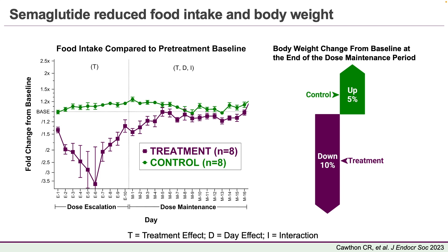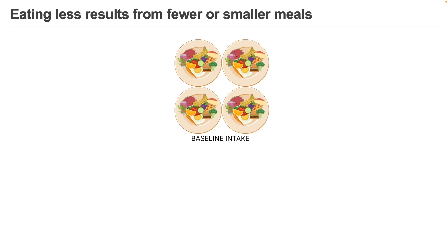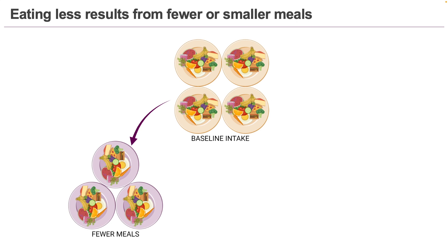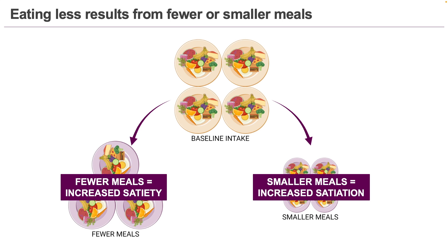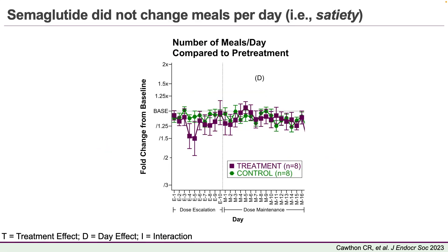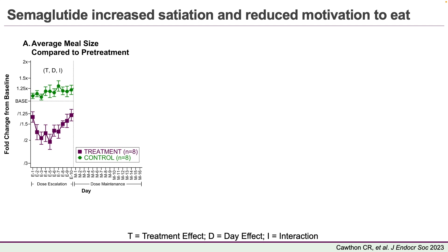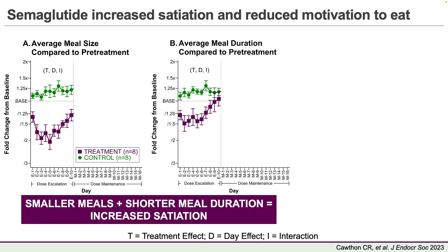But total intake is the result of behavior, and I wanted to know how it happened. So I turned to meal patterns. Like humans, rats eat in discrete bouts that we call meals. For a rat or a human to eat less, they would need to eat either fewer or smaller meals. Since meal frequency and meal size are controlled by different pathways in the brain, accurately studying the eating behavior provides a neuroscience roadmap. When we look at meals per day, we can see that the semaglutide rats didn't reduce their intake by eating fewer meals. Instead, they ate smaller meals and spent less time eating, and these both indicate that semaglutide increased satiation.